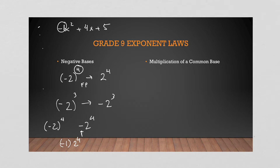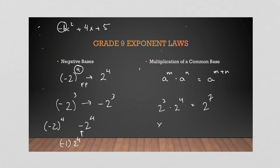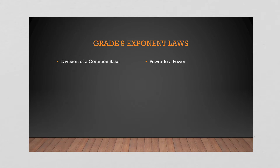That was a big theme from grade 9. Now multiplication of a common base: when we have a base that's the same and we are multiplying them together, we add the exponents. For example, 2³ × 2⁴ = 2⁷. Same with variables: x² × x⁴ = x⁶. Multiply a common base, add exponents.